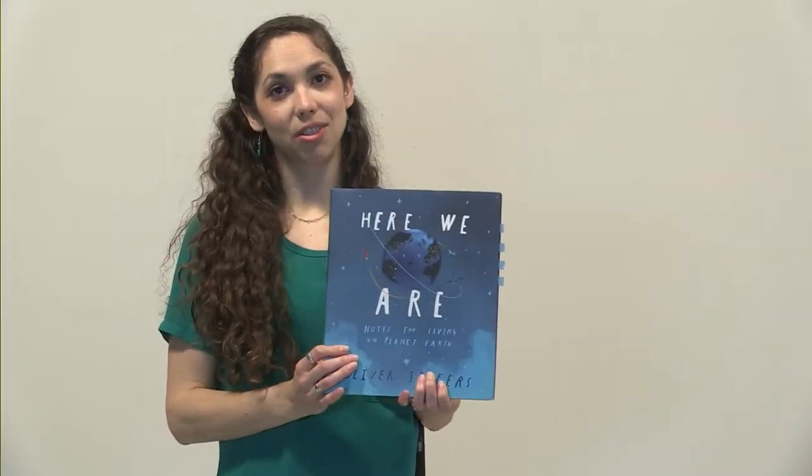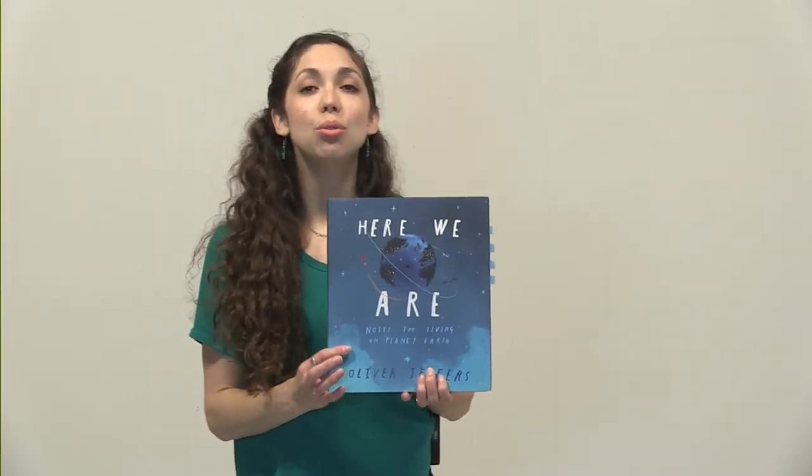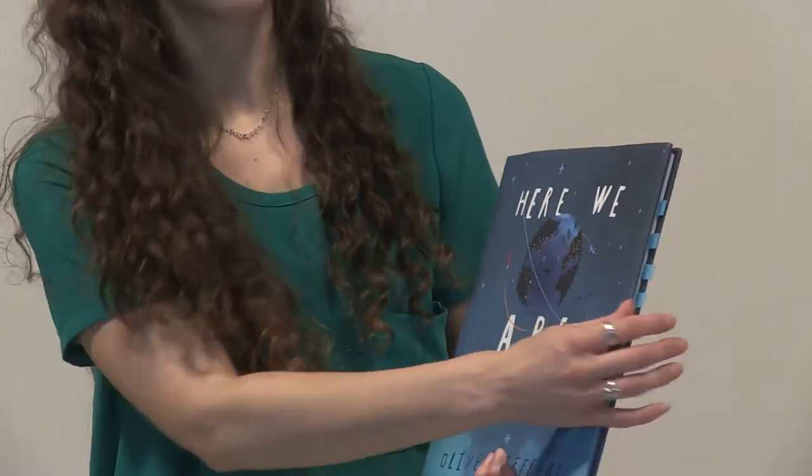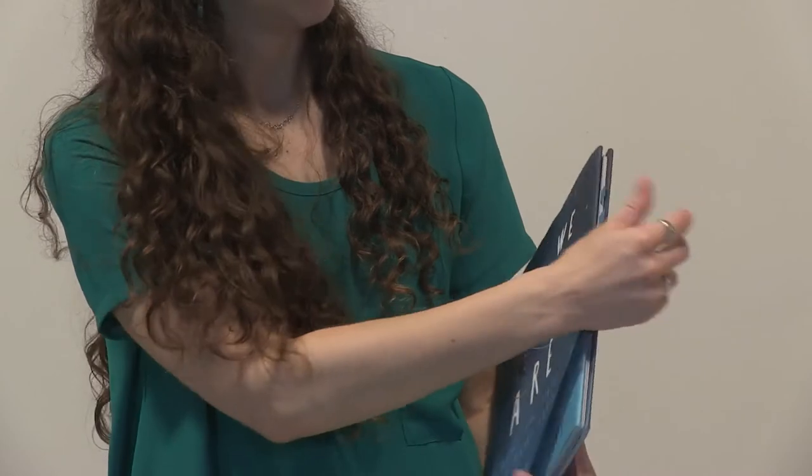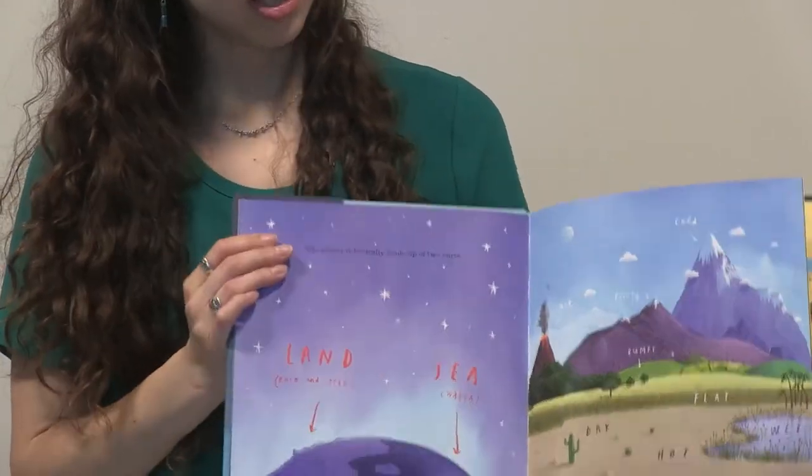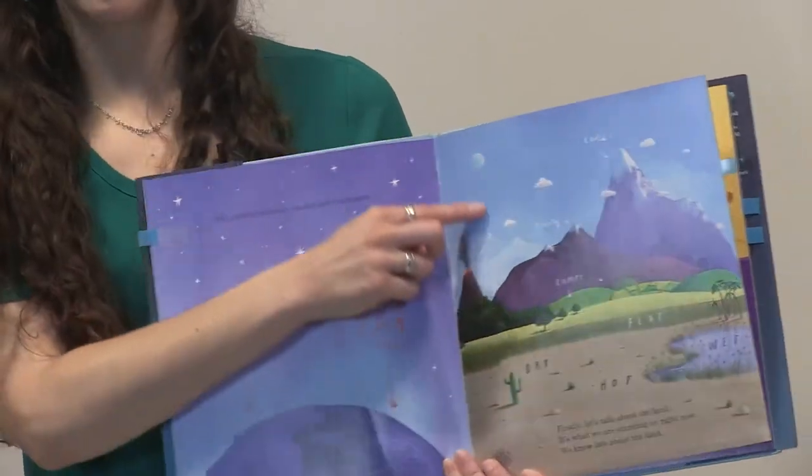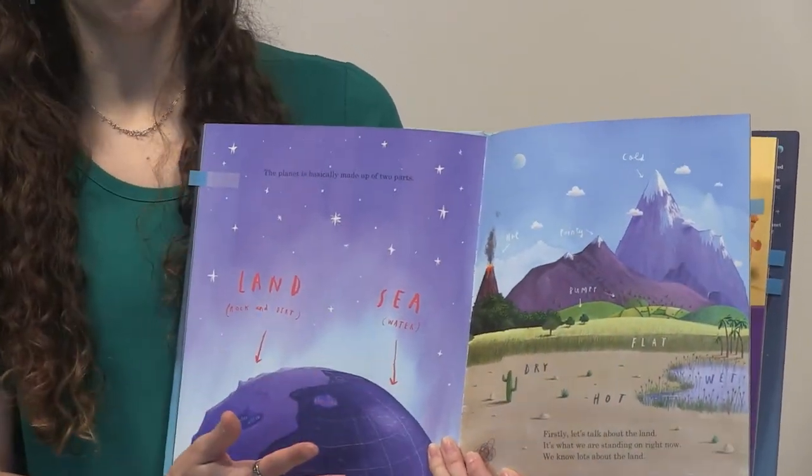Let's look at some examples. This is the book Here We Are by Oliver Jeffers, and it has some beautiful pictures of the earth that we live on and the things that are all around us. Let's start on this page. We can see all kinds of different parts of the earth on different levels.